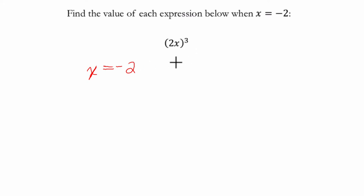With that in mind, I rewrite it. So in parentheses, we have 2 times x. Well x is negative 2. That's what we're told here. So 2 times x is 2 times negative 2, and I'm using parentheses to show multiplication.